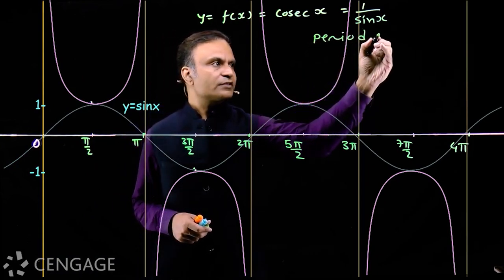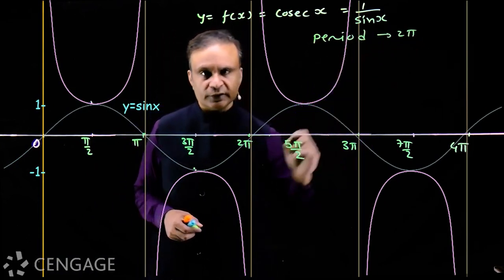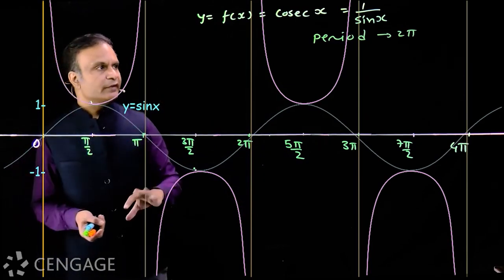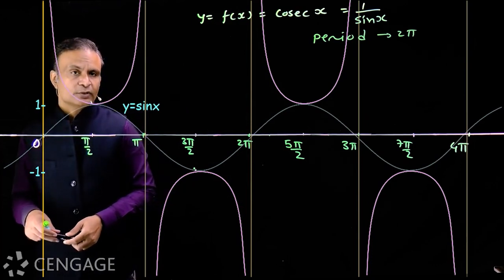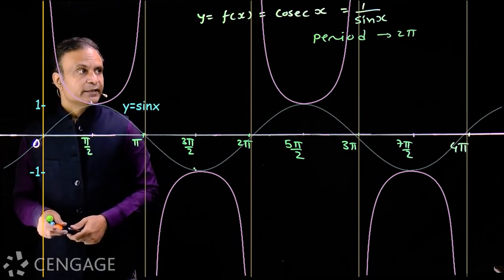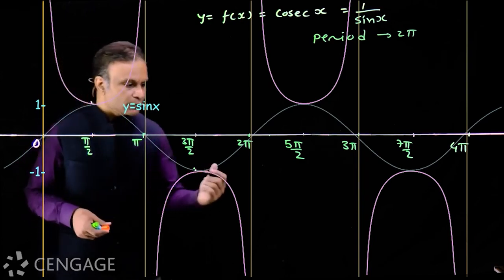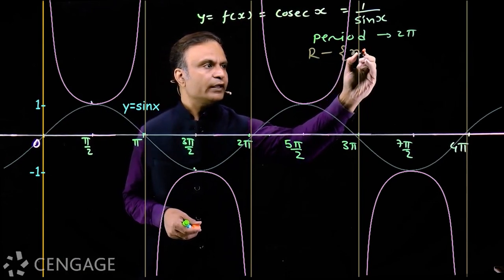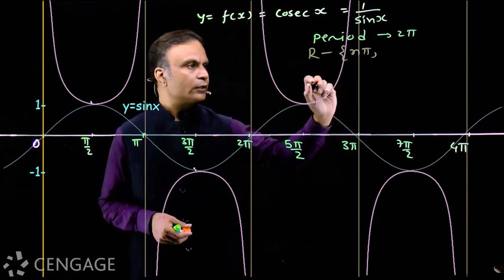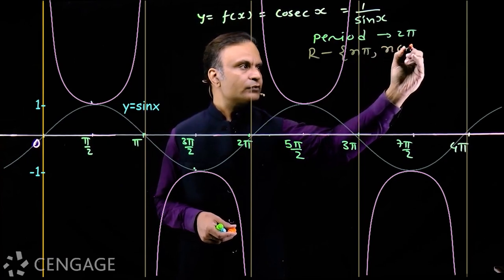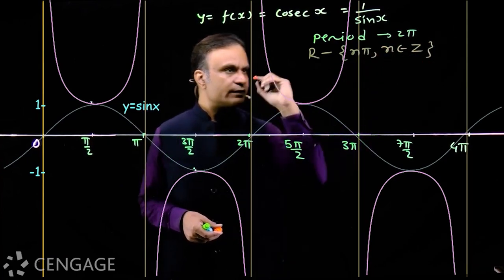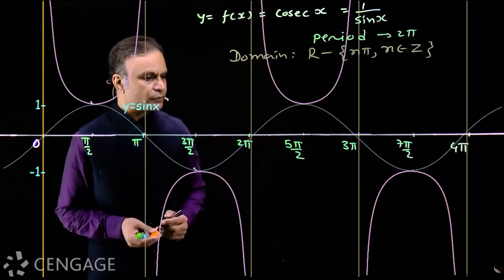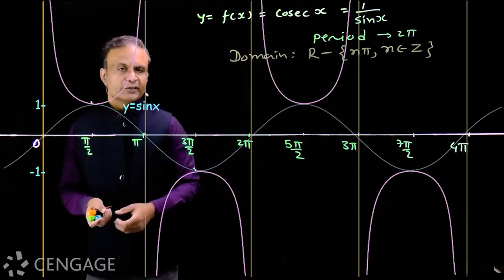The period of function cosec x is 2π. Now, what is the domain of the function? This function is not defined when sin x = 0, and sin x = 0 when x is an integral multiple of π. So the domain of cosec x is all real numbers excluding the set {nπ | n ∈ ℤ}.